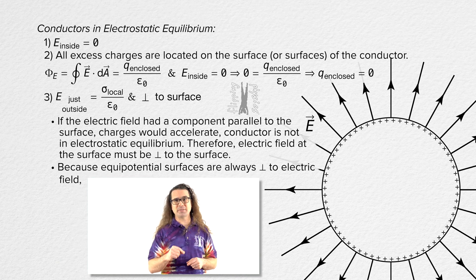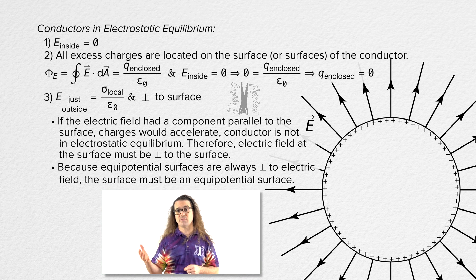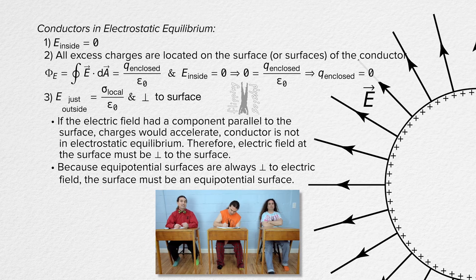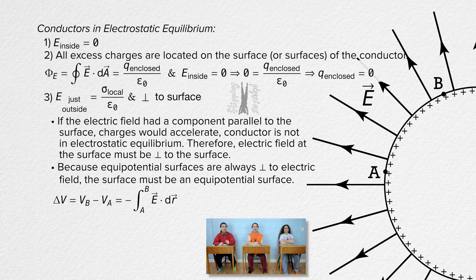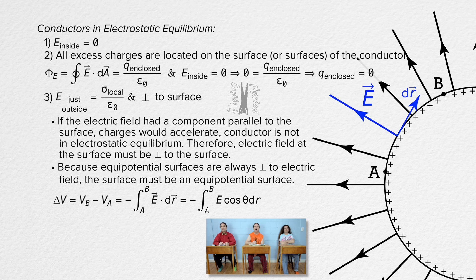Also, because equipotential surfaces are always perpendicular to the electric field, the surface of a conductor in electrostatic equilibrium must be an equipotential surface. The electric potential difference between two points A and B on the surface equals the negative of the integral from A to B of the dot product of the electric field and the infinitesimal displacement dr. Since the electric field is always at a right angle to the surface, the angle between the electric field and dr along the surface always equals 90 degrees. The cosine of 90 degrees equals zero, so the electric potential difference between any two points on the surface equals zero — which is the definition of an equipotential surface.